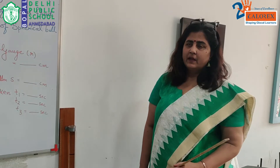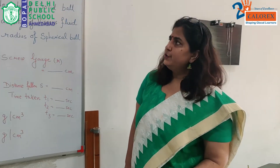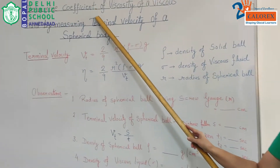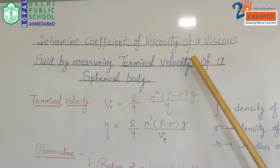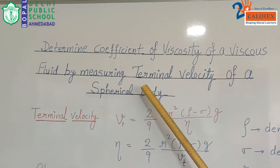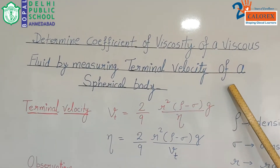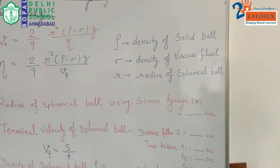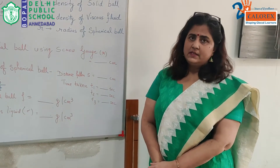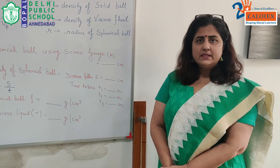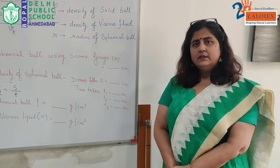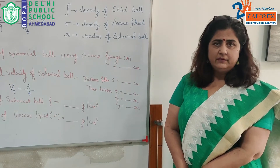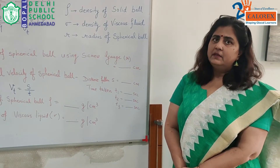Good morning children. Today we are going to do an experiment to find the coefficient of viscosity of a viscous fluid by measuring the terminal velocity of a spherical body. We have learnt in fluid dynamics that whenever a solid falls through a viscous fluid, after some time the velocity of the solid becomes constant, and that velocity we call as the terminal velocity.